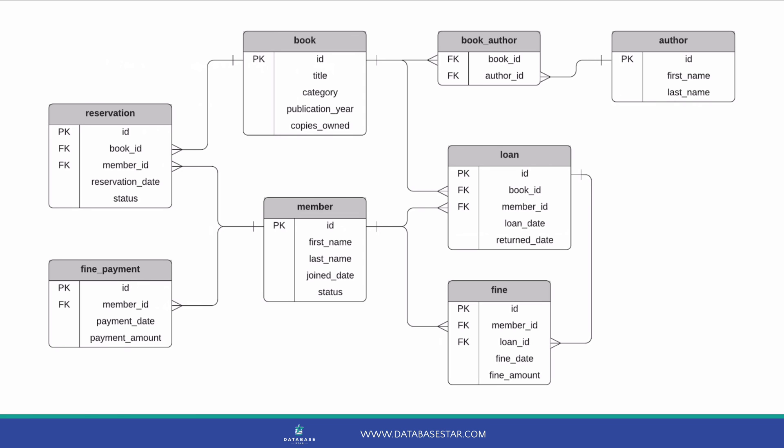We also need a way to record when a loaned book was returned. One way is to have a returns table that stores returns of items. Another way would be to update the original loan when an item is returned. I'll go for the second option, as it seems simpler — we can add a returned_date field to the loan table.